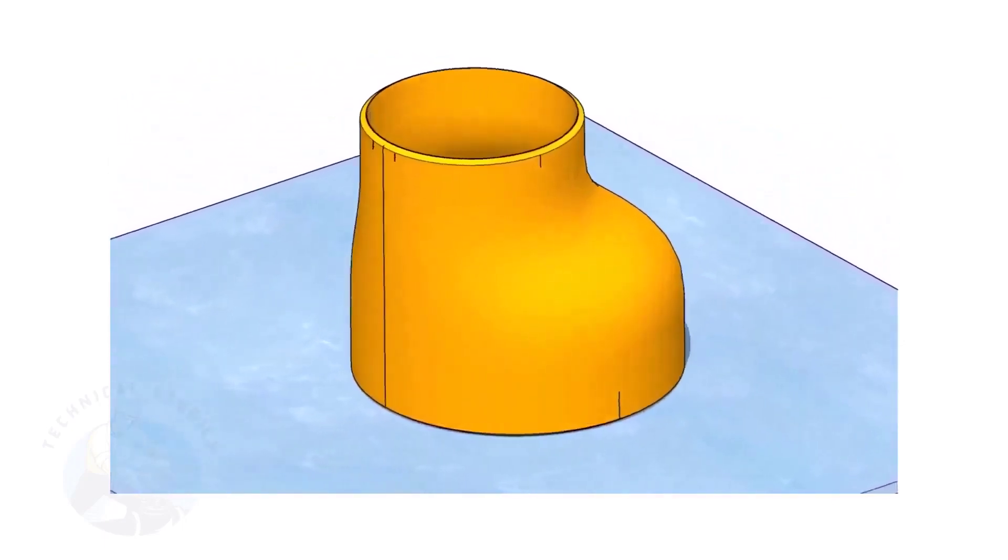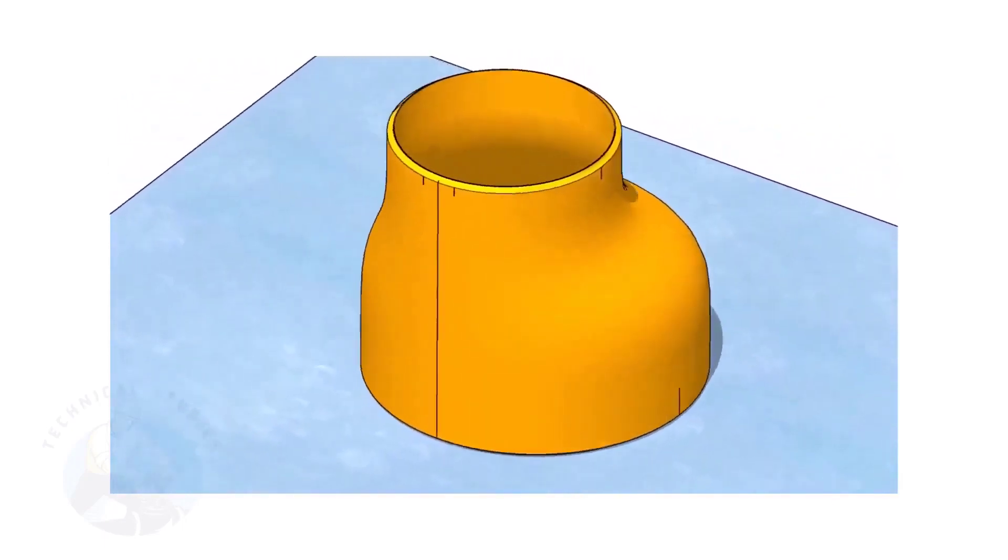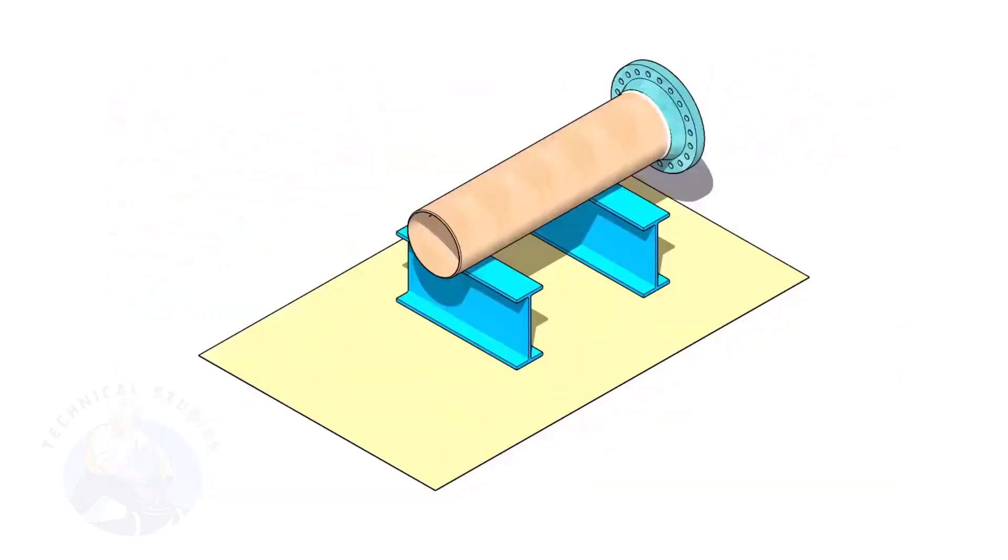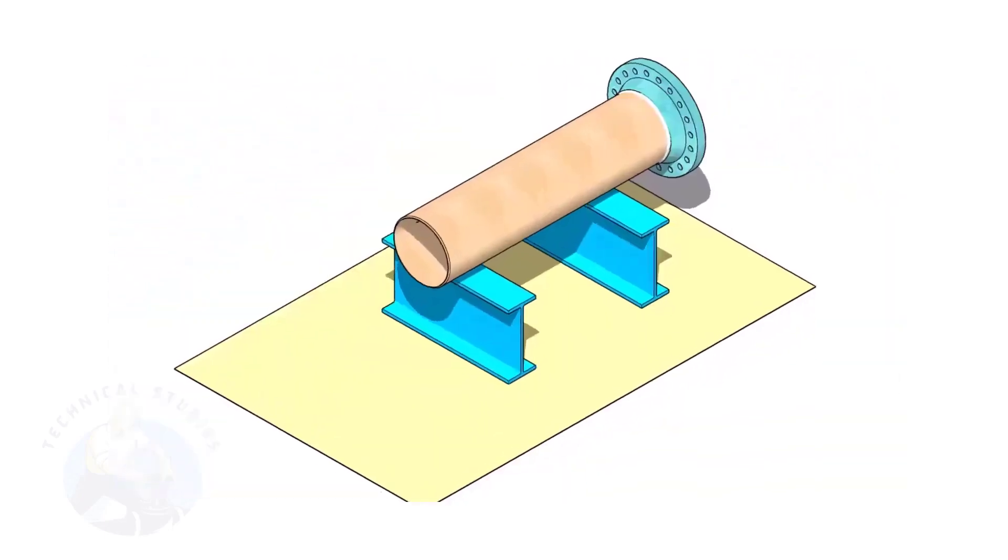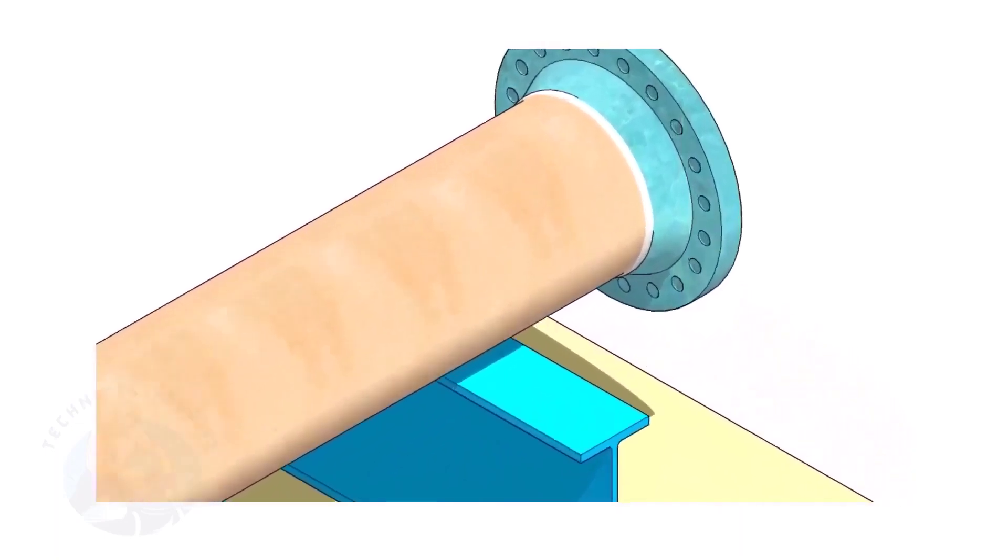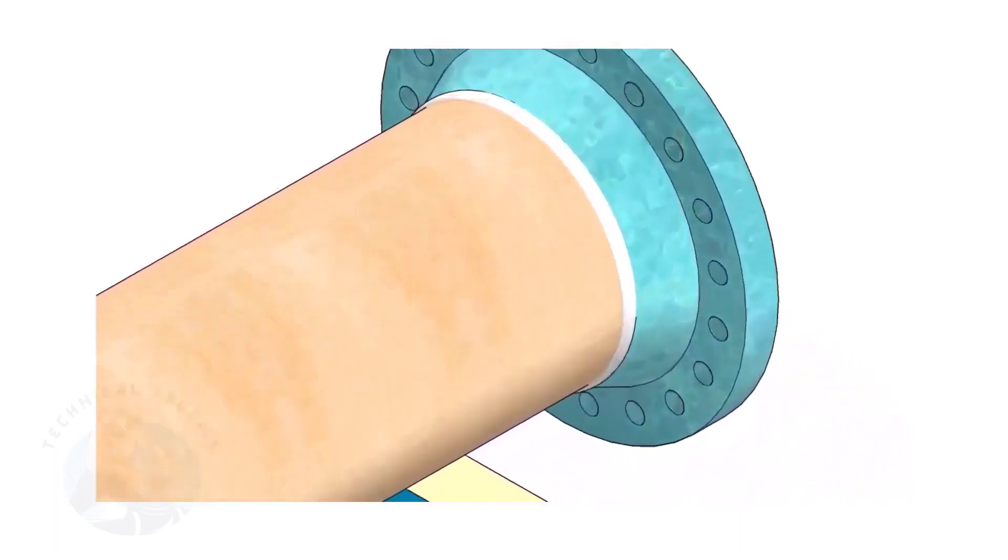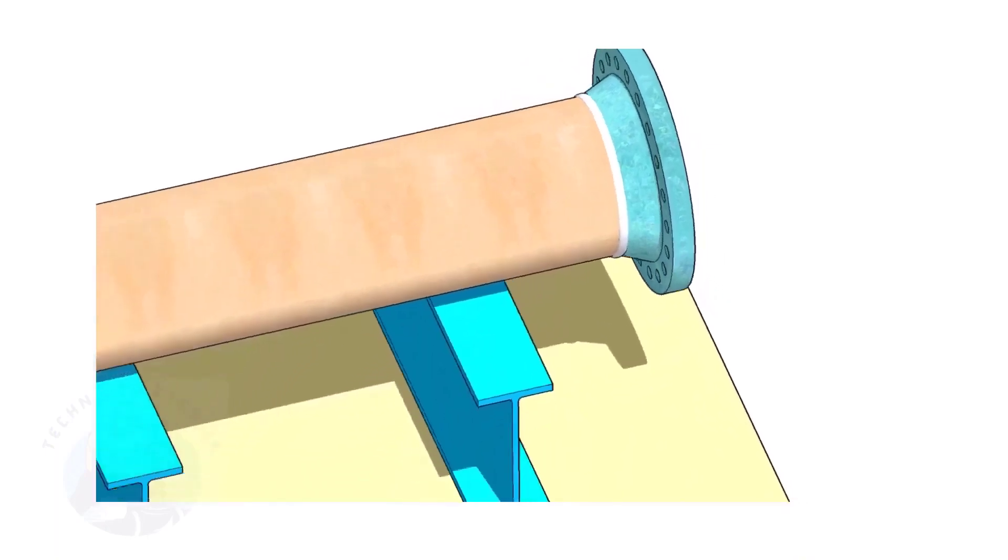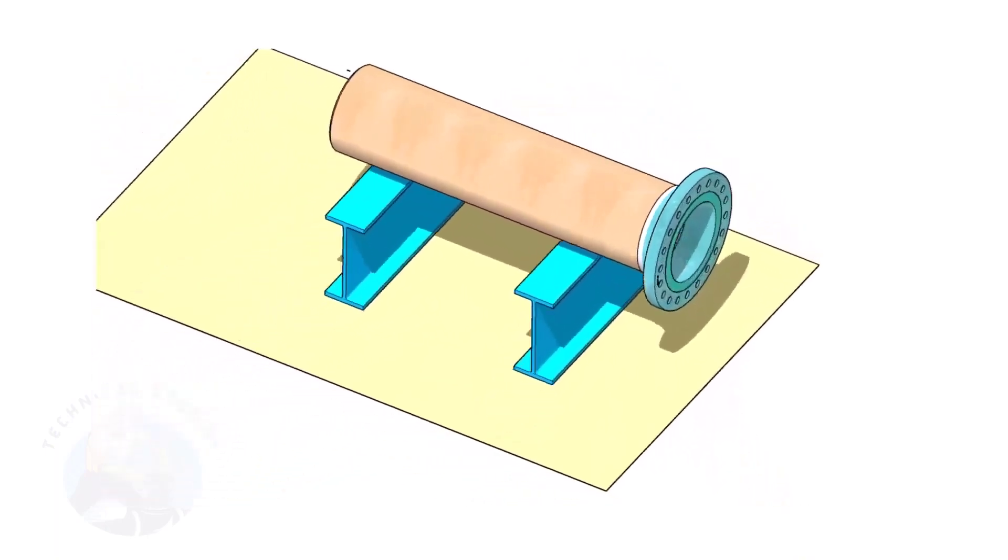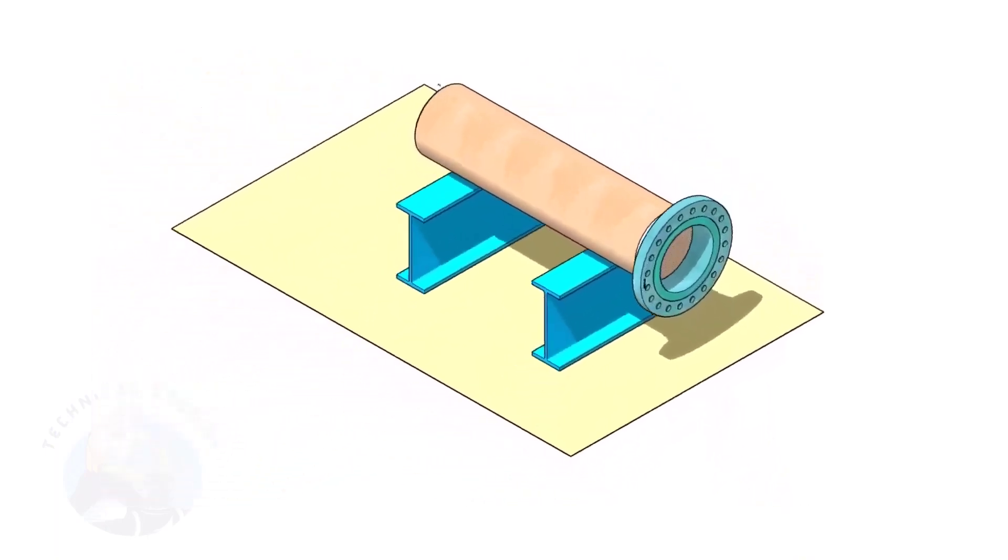Remember, the sequence of the fit up is more important. Assume that the flange is welded to the pipe. Put the spool on suitable supports. Correct the plumbness of the flange.